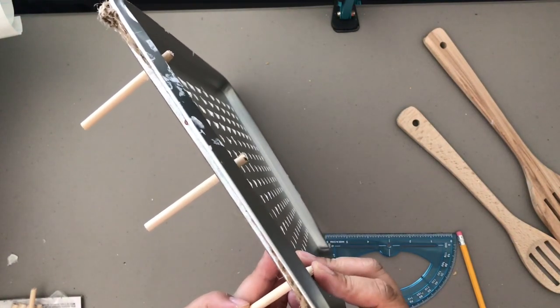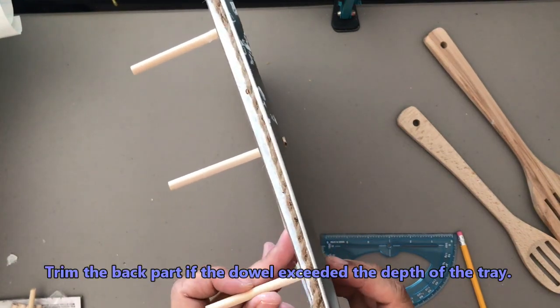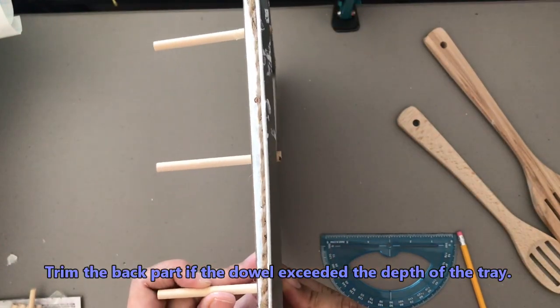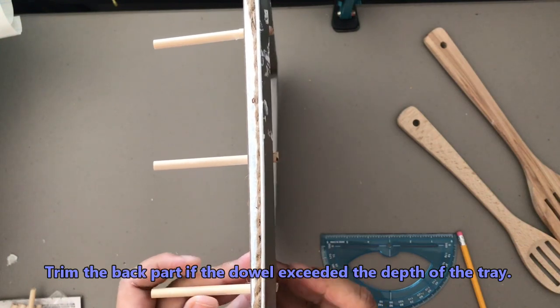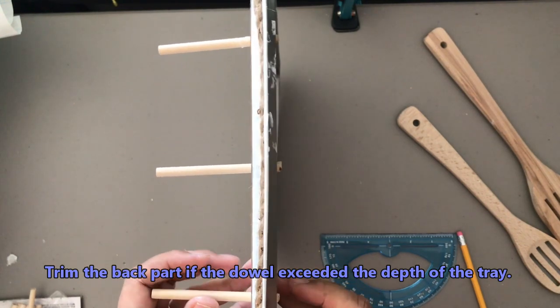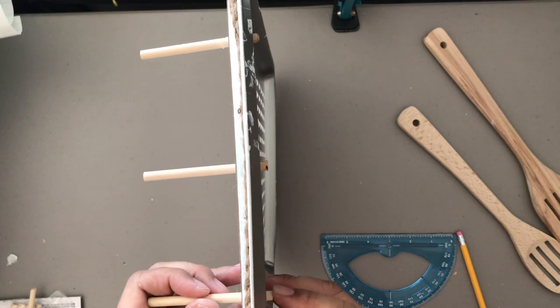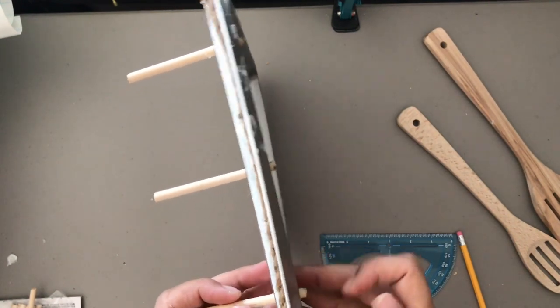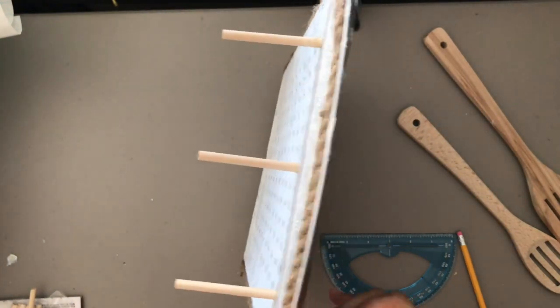And one more thing - make sure also that the back part is not protruding or it's not surpassing the indentation of your pan, or otherwise it will not sit well on your wall.